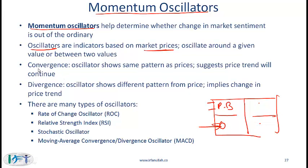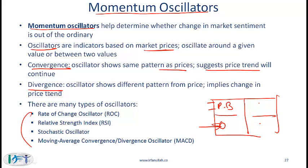You also need to recognize the concept of convergence and divergence. Convergence means that an oscillator shows the same pattern as the price of the security, which suggests that the price trend will continue. Divergence means that the oscillator shows a different pattern from the price of the underlying security, and this implies a change in the price trend.